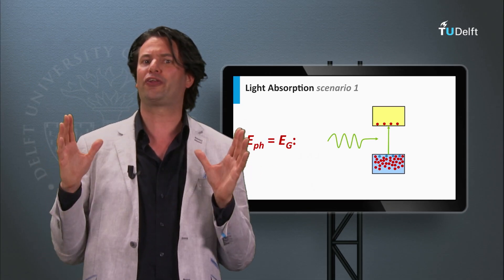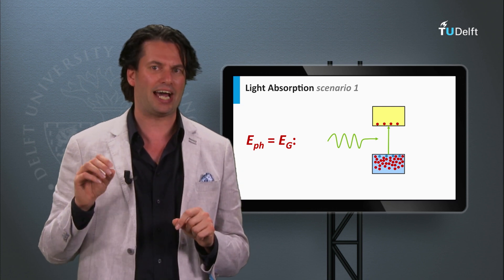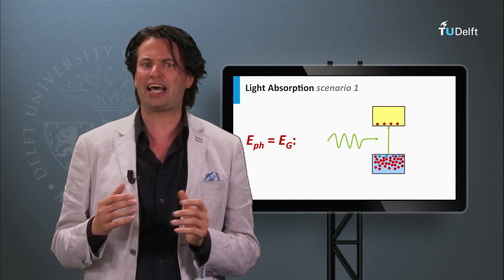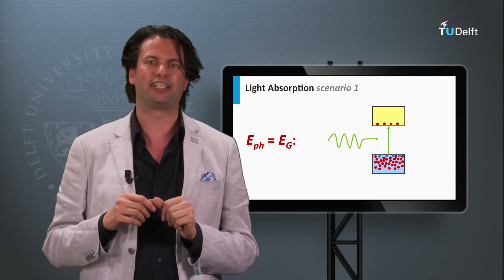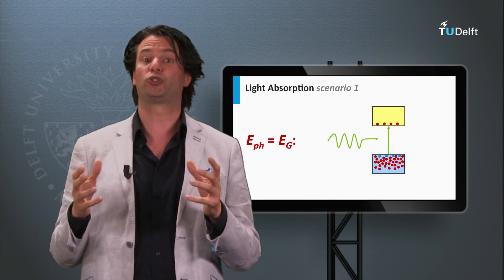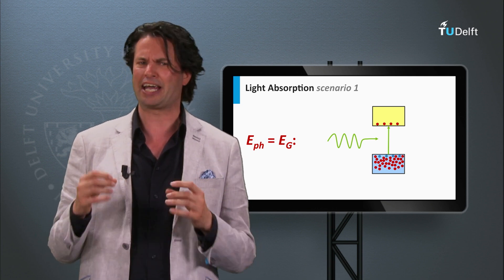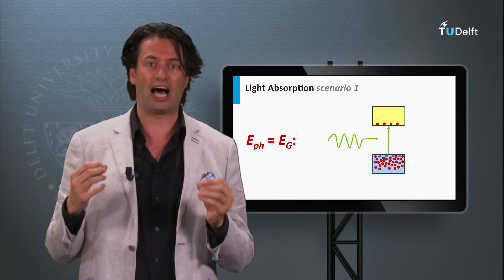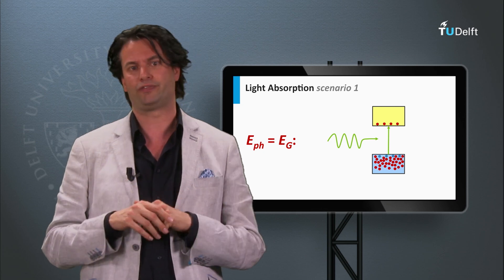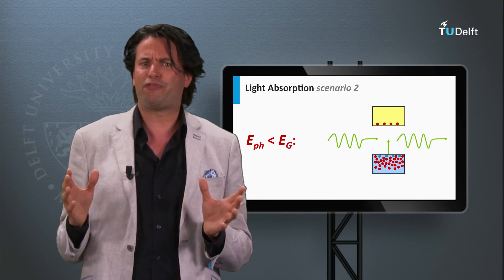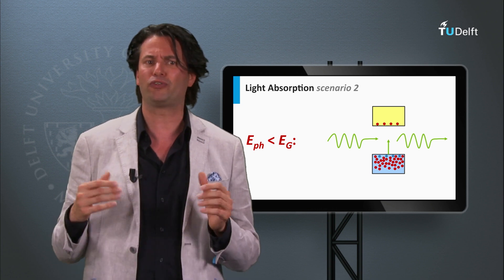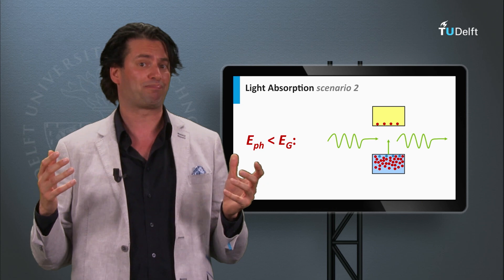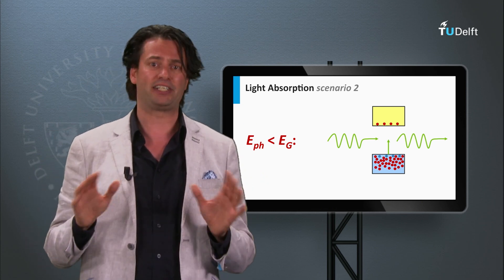Now we consider a third approach to excite charge carriers, which is by light absorption. Let's consider the electronic band diagram again and a photon with an energy equal to the band gap, indicated by the green arrow. This photon can be absorbed in a semiconductor material and used to excite an electron from the valence band to the conduction band, so light can make a semiconductor material more conductive. However, if we have a photon with an energy smaller than the band gap, this photon is lacking the energy to excite an electron from the valence band to the conduction band and cannot be absorbed by the semiconductor material.